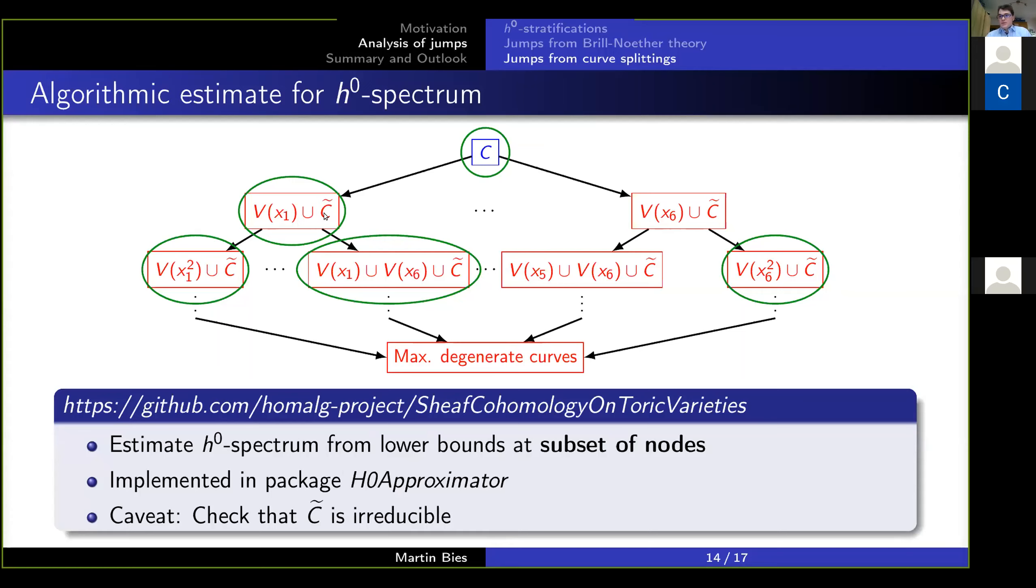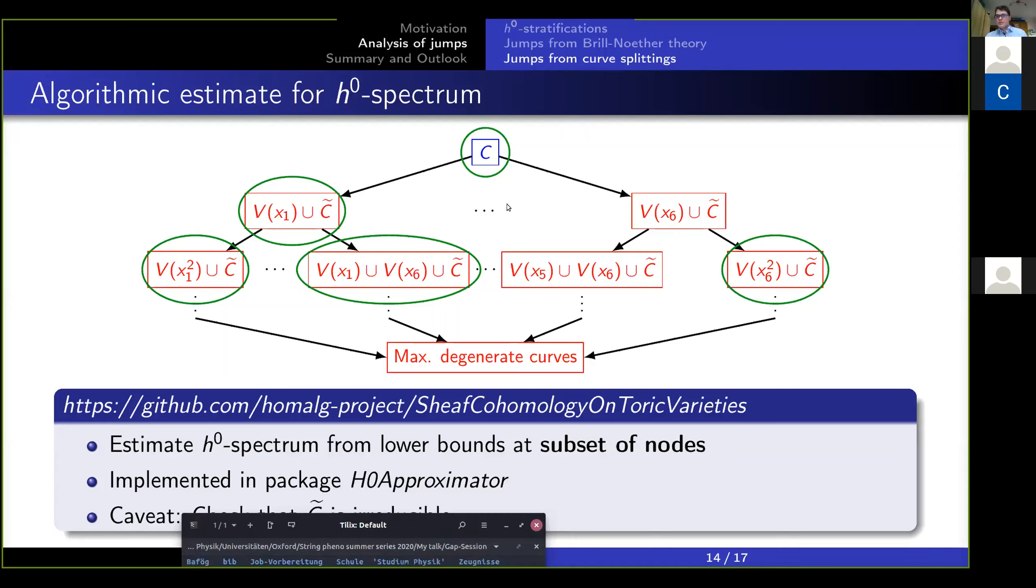One caveat that I want to point out in this procedure is the following. When you do these factorizations here, then you want to make sure that this remainder part is irreducible. If it's not, then the counting fails. So the only way that I at least know to check irreducibility is to perform a primary decomposition, and that is again beyond topology or differently, it takes a little bit more time. So that is why I decided to have two things implemented, namely a rough and a fine approximation. Let me show you how this works.